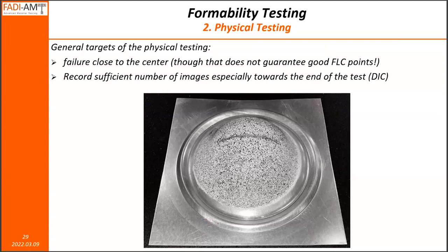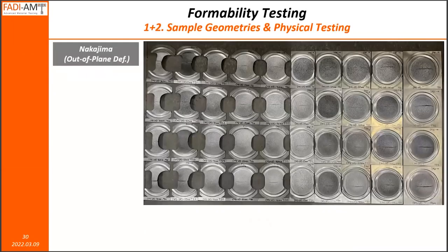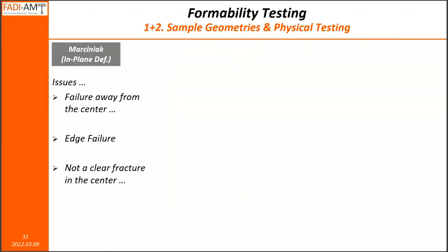The second thing to keep in mind during the testing phase is to have sufficient number of images during testing, especially towards the end of the test. That relies on your DIC — it must provide enough frame rate, especially for high-strength steels or brittle materials such as limited ductility aluminum alloys. Whether it's sample geometry or the physical testing, what we're looking for is favorable failure. I'm showing here for Nakajima testing a nice set of samples — very nice failure across the board, four repeats, nine or ten different geometries. Everything worked out fantastically for this material, which happens to be a steel.